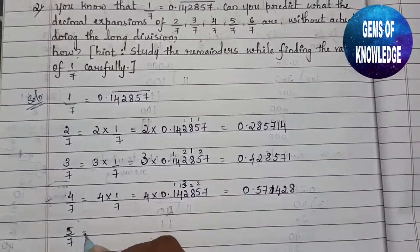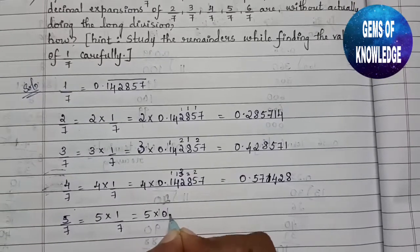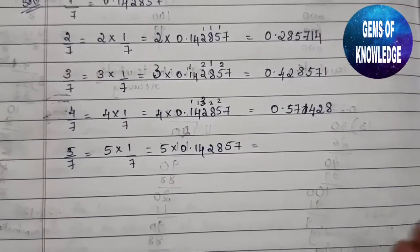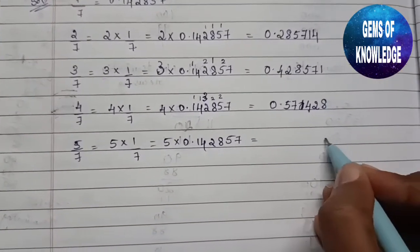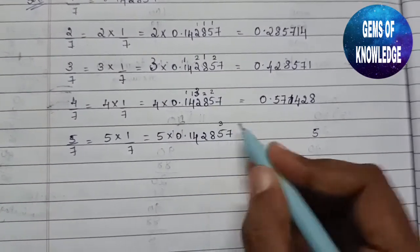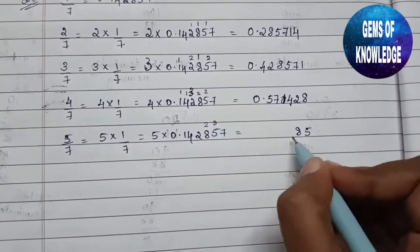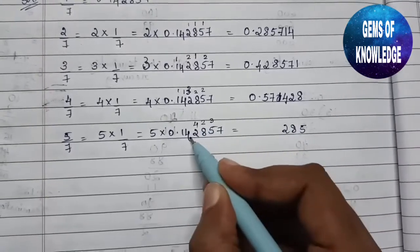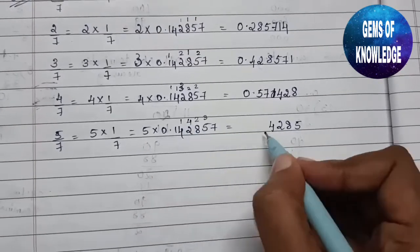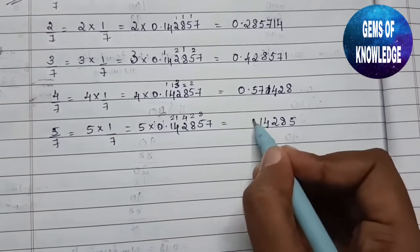Next, 5/7 = 5 × (1/7) = 5 × 0.142857. Multiplying: 5×7=35, write 5 carry 3; 5×5=25+3=28, write 8 carry 2; 5×8=40+2=42, write 2 carry 4; 5×2=10+4=14, write 1 carry 1; 5×4=20+1=21, write 1 carry 2; 5×1=5+2=7. So 5/7 = 0.714285.